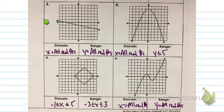I hope for number 3, we can notice it goes forever left and right, also forever up and down. That's where we got all real numbers. For number 4, it's going to go left and it's going to go right forever. However, our range, the highest it's going to go is 5, but it'll also go everything lower than that. So y needs to be less than or equal to 5 for the range.